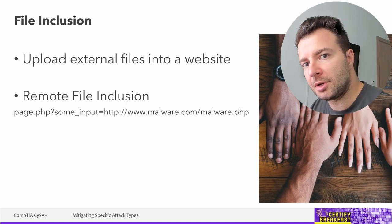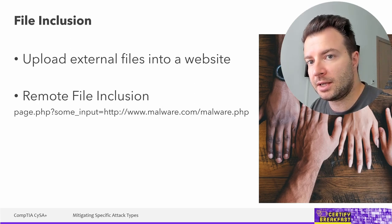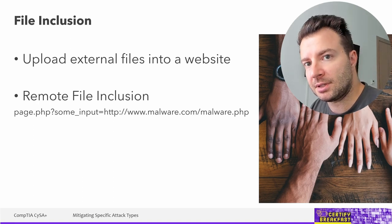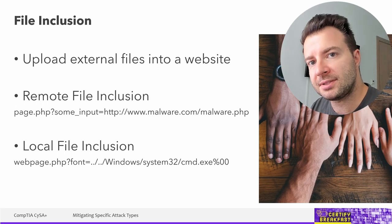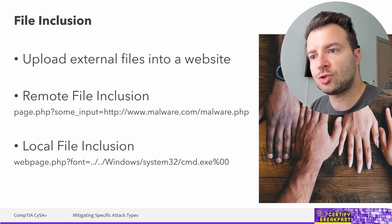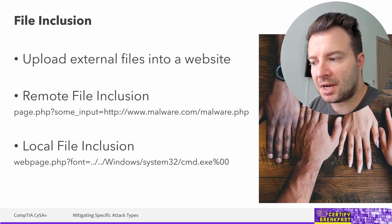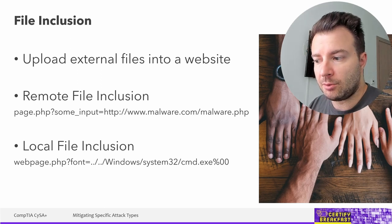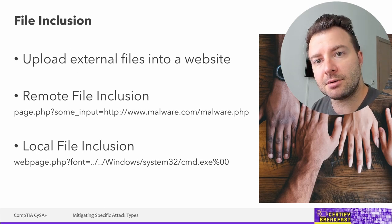With remote file inclusion, an input expected by a website — such as a redirect address hardcoded in the URL — can be replaced with a link to a malicious file online, tricking the application into downloading and potentially executing its contents. On the other hand, local file inclusion tricks the application into loading a file already on the same web server. This usually happens with applications already vulnerable to directory traversal, because we need the application to breach out of its confines and access the rest of the file system.